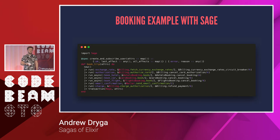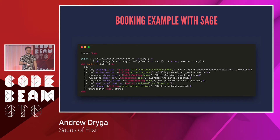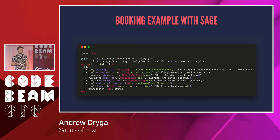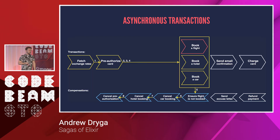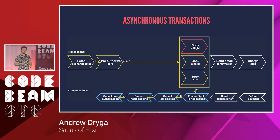Internally, Sage is a data structure. You append steps you want to perform, and you only execute it when the struct is built. When executed, Sage does its best to either complete all the transactions or run all the compensations to amend partial execution. Looking at the code sample, even though it's small it shows a lot of features. The first one allows you to run transactions asynchronously — they spawn tasks not linked to the process running the Sage. Sage itself runs in the process where you execute it, so it doesn't spawn anything without you knowing.